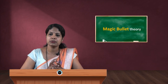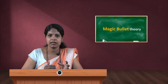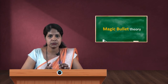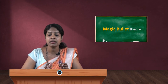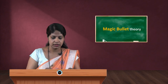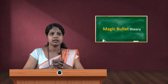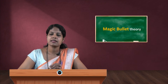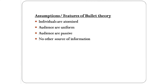Hitler used all possible forms of media — print, radio, and film — to propagate his Nazi Germany or Third Reich. Now let us see the assumptions and features of the magic bullet theory. The first assumption is that individuals are atomized.